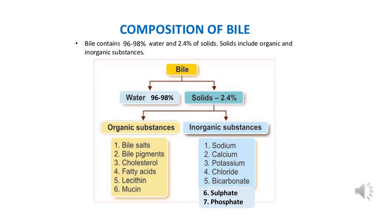The composition of bile. Bile contains 96 to 98% water, though in some places it is also written as 87% water, and the remaining percent is composed of solids. The solids include organic and inorganic constituents.